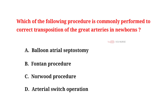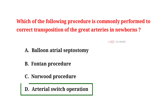Which of the following procedures is commonly performed to correct transposition of the great arteries in newborns? A. Balloon atrial septostomy. B. Fontan procedure. C. Norwood procedure. D. Arterial switch operation. And the correct answer is D. Arterial switch operation.